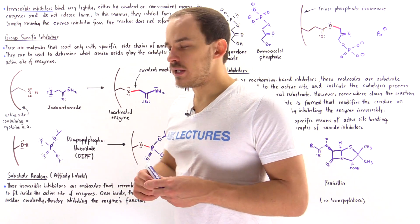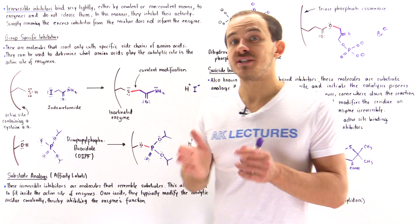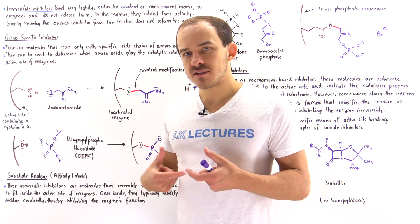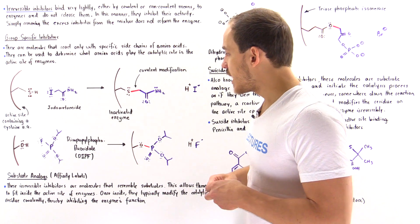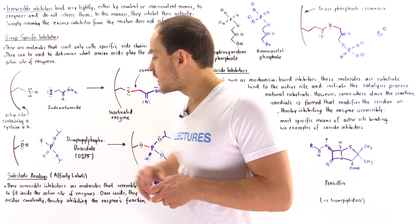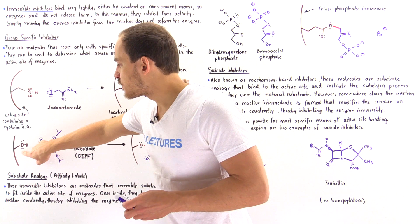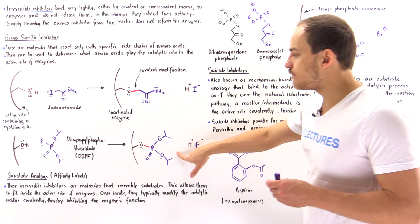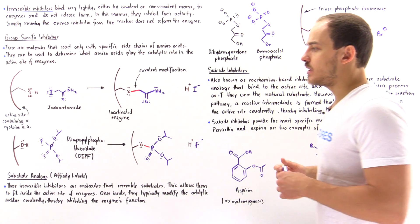In the second example, diisopropyl phosphofluoridate reacts with serine amino acids. In the active site of acetylcholinesterase, serine residues catalyze the reaction. When DIPF is introduced, it forms a covalent bond between the phosphorus and the oxygen of that serine, kicking off the fluoride and the H to produce a covalent modification. These are two examples of group specific irreversible inhibitors.